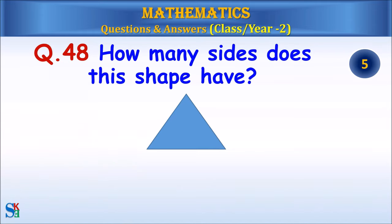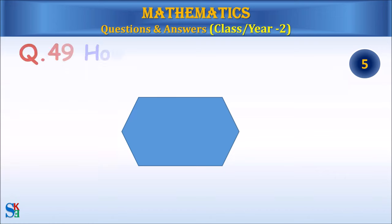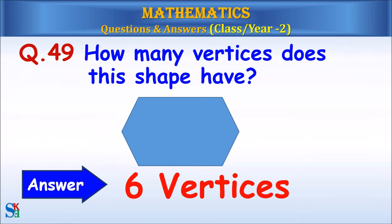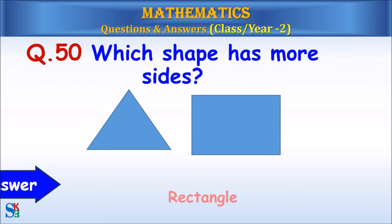Question 48: How many sides does this shape have? Answer: 3 sides. Question 49: How many vertices does this shape have? Answer: 6 vertices. Question 50: Which shape has more sides? Answer: Rectangle.